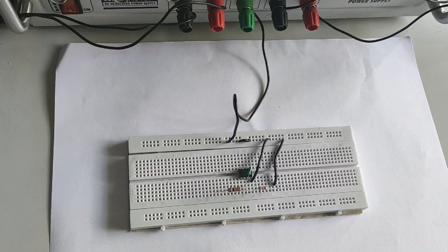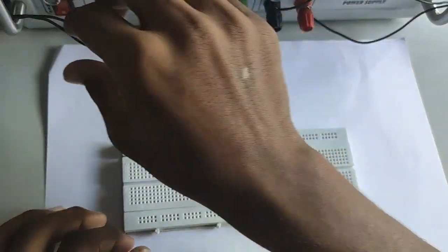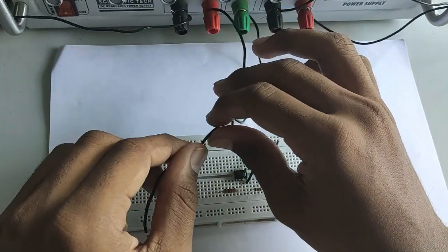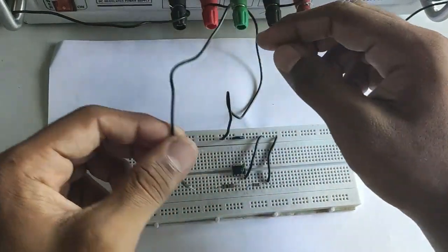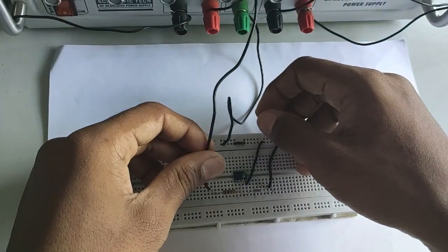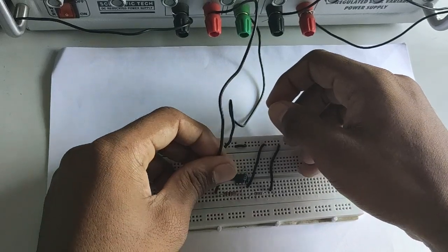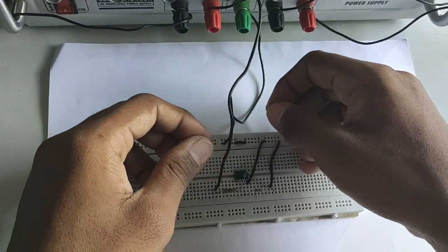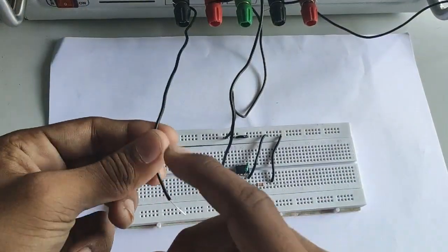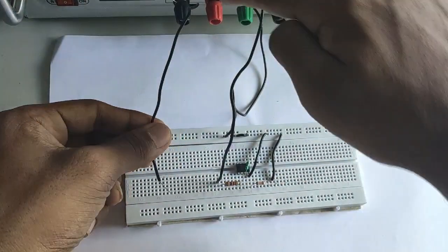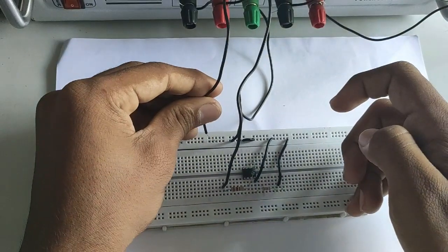You guys might have noticed that the other end of the 1k ohm resistor is left free. So, we are giving a supply of 5V to the other end of the 1k resistor. Let us also make sure that the 5V supply is also grounded.